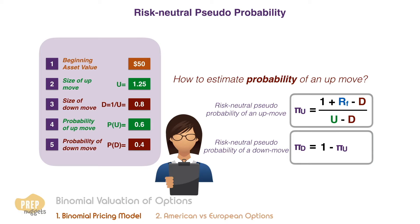The derivation of the formula is not required for the Level 1 exam, so you just need to know how to apply it. It'll suffice to know that their calculation is based on an arbitrary relationship based on risk-neutral probabilities at the risk-free rate.